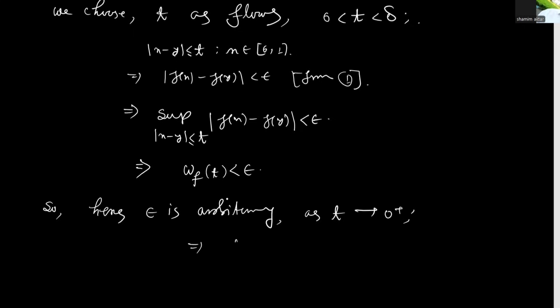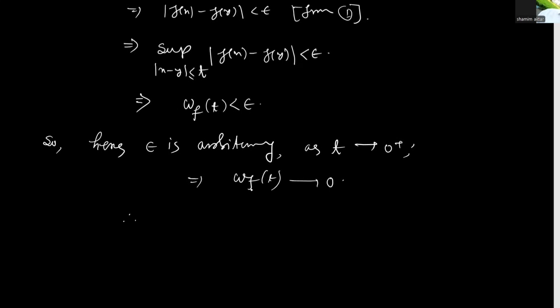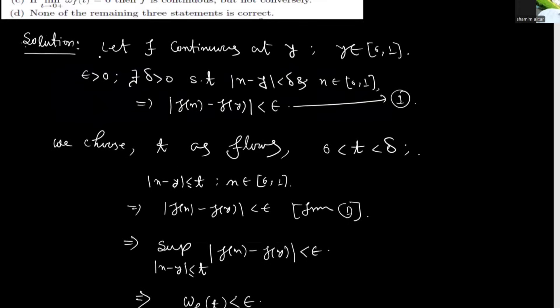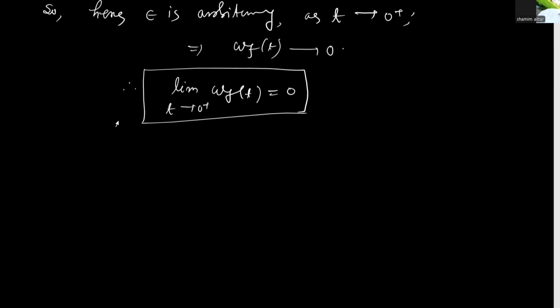Since ε is arbitrary, as t tends to 0+, wf(t) tends to 0. Therefore, the limit as t tends to 0+ of wf(t) equals 0. So if f is continuous at y, we can conclude that the limit as t tends to 0+ of wf(t) is equal to 0.